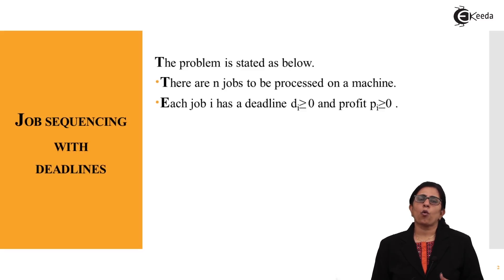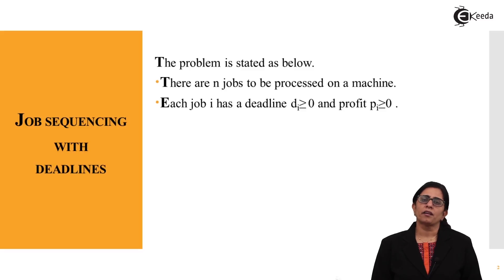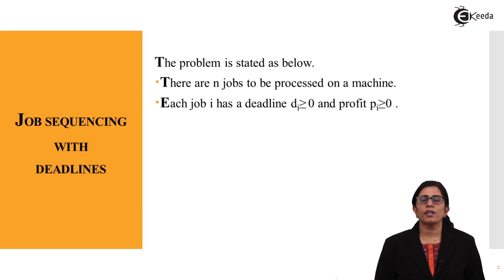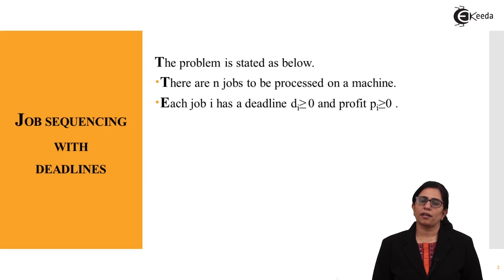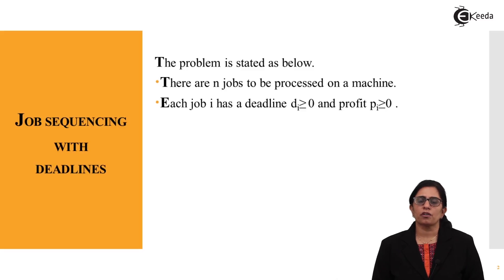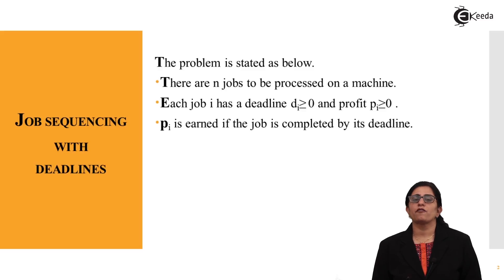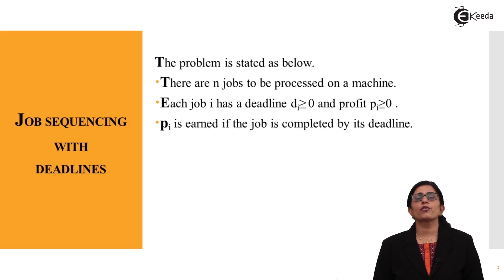Profit is what we gain after we undergo a particular process on a machine, and each process has a deadline. For example, if you are trying to load something on the internet and the connection is slow, it says timeout because everything has a deadline — a limited time after which it is a timeout scenario. The profit is earned if the job is completed by its deadline, and if it is not, then no profit is earned.